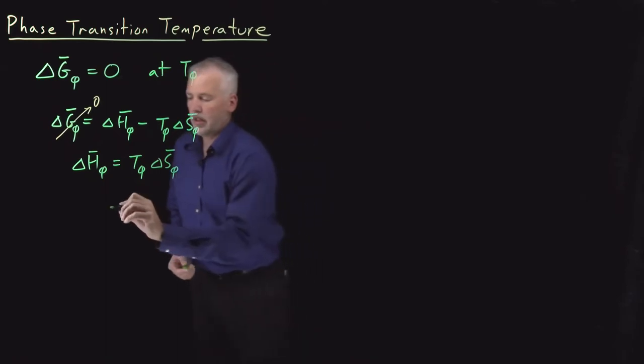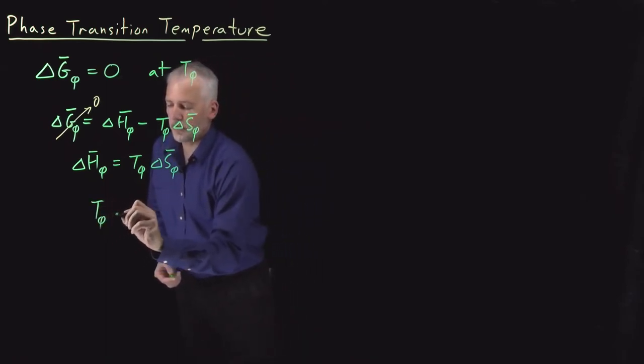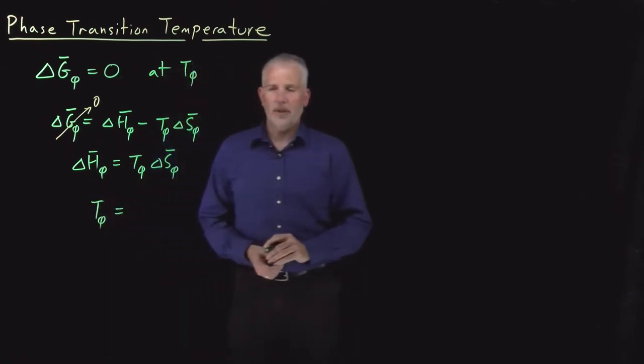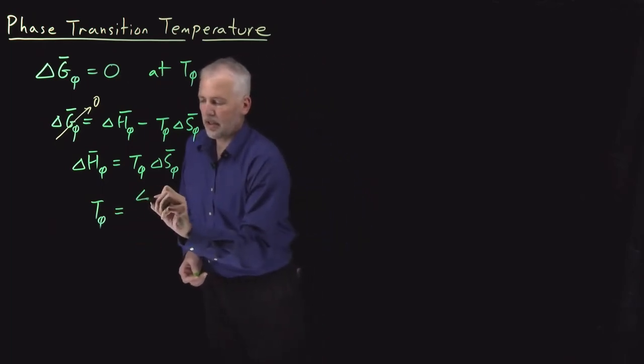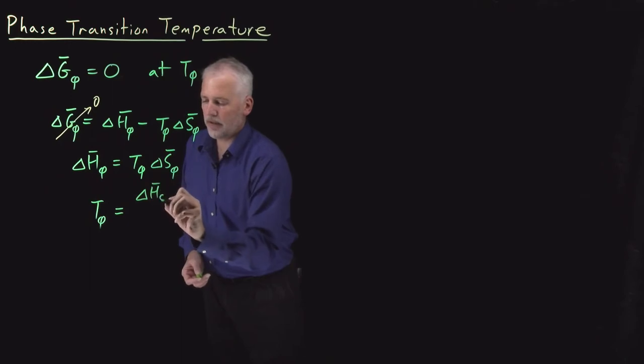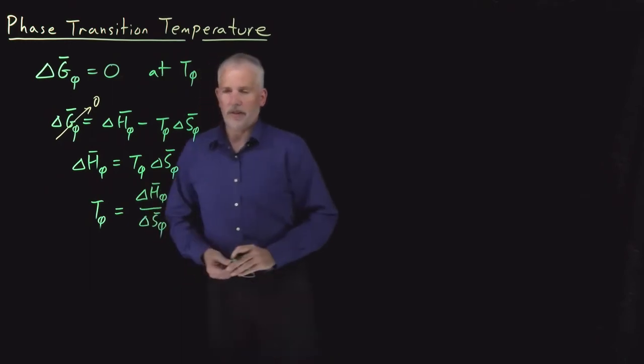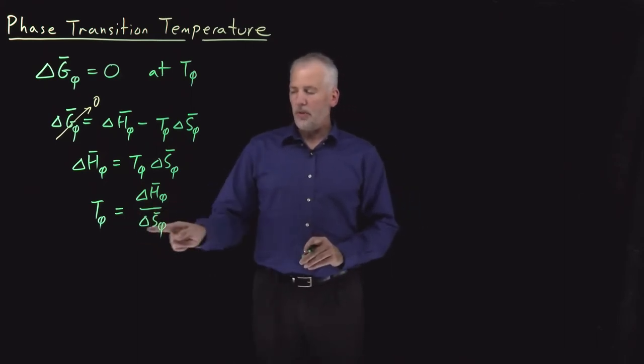Or the form where that equation is most useful most of the time is to isolate the temperature. The temperature at which a phase transition occurs is enthalpy of that phase transition divided by entropy of that phase transition.